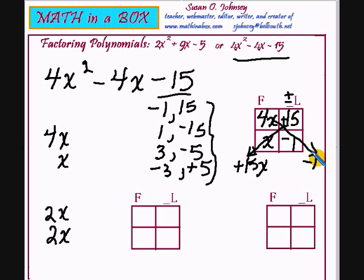And going across this way, we get a negative 4x. Now when we combine these together, that's where we need to have the middle term. 15x minus 4x is 11x. And that is not our middle term. So that tells me that I did not do the work correctly.